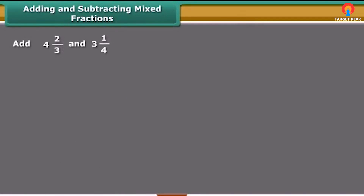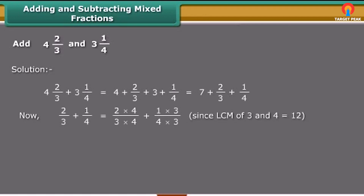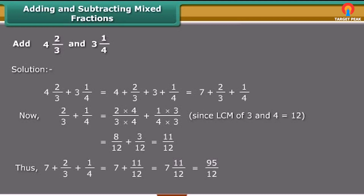Mixed fractions can be written either as a whole part plus a proper fraction or entirely as an improper fraction. One way to add or subtract mixed fractions is to do the operations separately for the whole parts and the fractional parts. The other way is to write the mixed fractions as improper fractions and then directly add or subtract them.